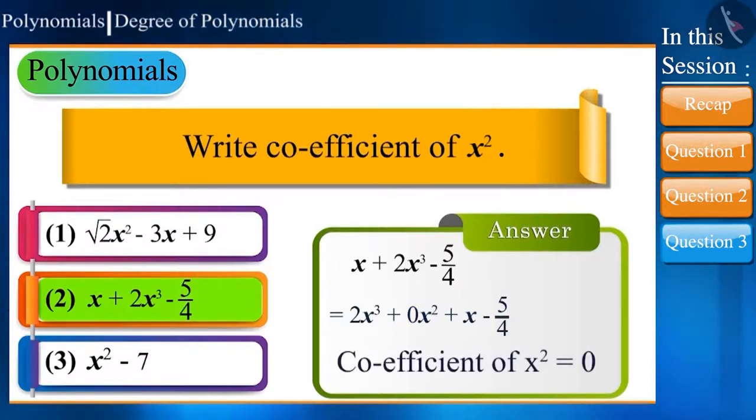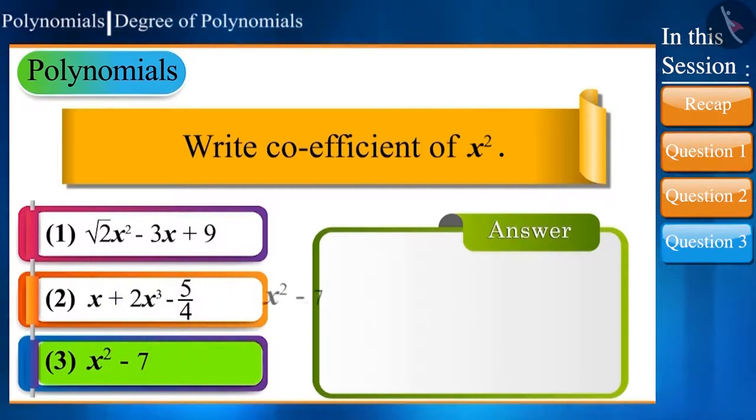The next polynomial is x² - 7. Will the answer be 0 in this case also? No. If x² has no coefficient written, its coefficient is taken as 1, because multiplying any term by 1 gives the same term.